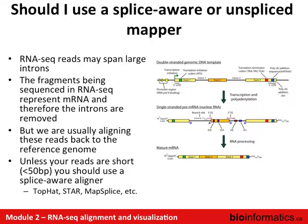Should you use a splice-aware or unspliced mapper? RNA-seq reads typically span introns, and the fragments being sequenced represent messenger RNA — therefore the introns have been removed. Since we're aligning these reads back to the reference genome, you pretty much need to use a splice-aware aligner. Examples include TopHat, STAR, and MapSplice. In the early days this was a question, but it's pretty much resolved now.